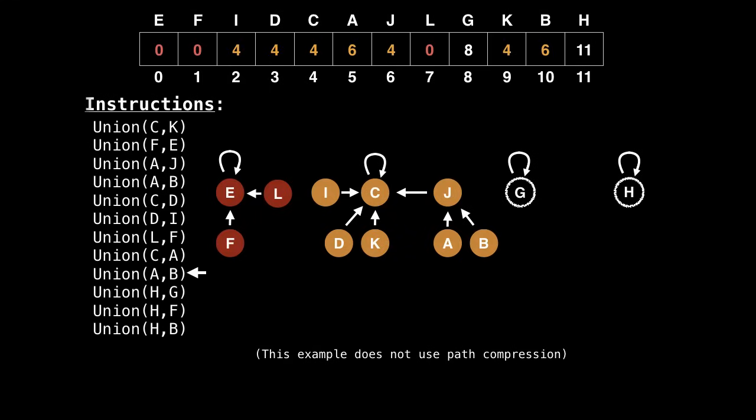So I want to unify a and b. If I go up and follow the parent nodes until I reach a root node, a's parent is j, j's parent is c. So I know that a belongs to the orange group. And if I do a similar thing with b, I also discover that b's parent is also c, which is the orange group. So I don't need to unify them. They're already unified together.